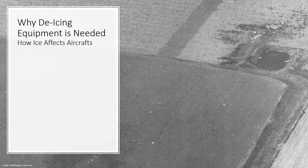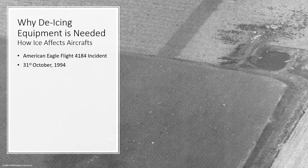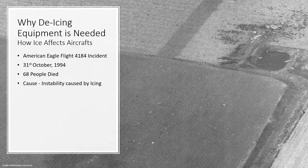American Eagle Flight 4184 was a domestic passenger flight from Indianapolis to Chicago, United States. It crashed on 31st October 1994. When the aircraft was about to land at Chicago airport, pilots experienced abnormal behavior of the aircraft. They lost control of the flight and the aircraft went into two full rolls before crashing nose first into a soybean field. The aircraft did not catch fire, but all 68 passengers and crew on board died from the extreme impact. When the accident was investigated, loss of control was attributed to aerodynamic disturbance caused by formation of ice on the aircraft.